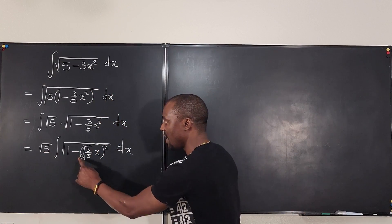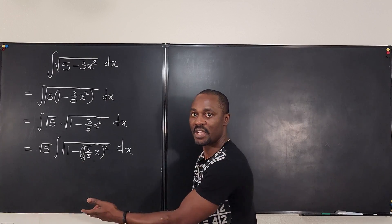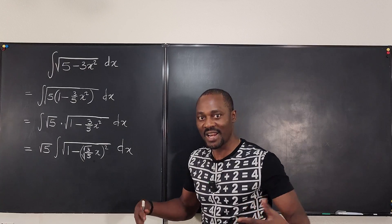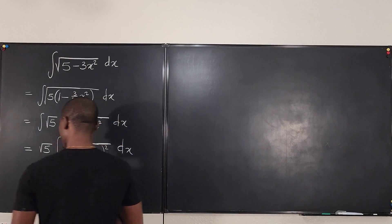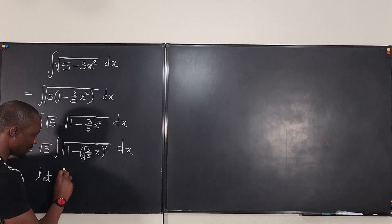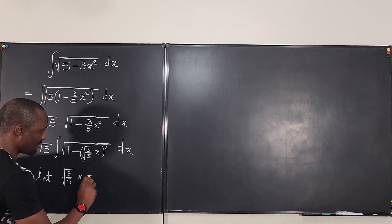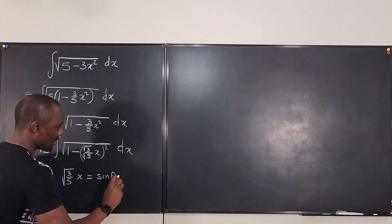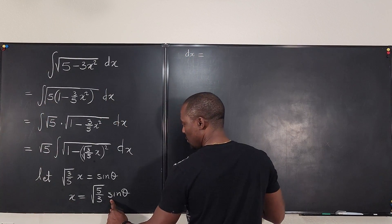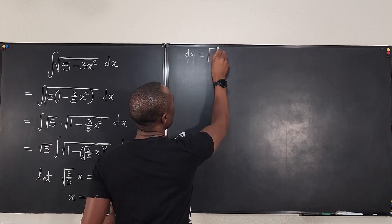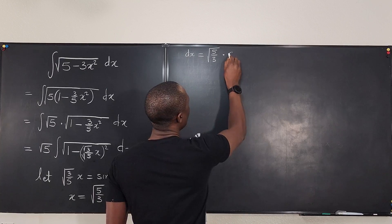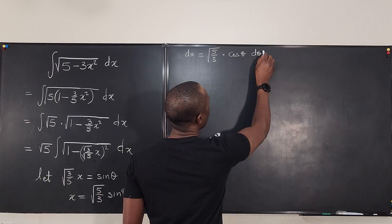It makes your life a lot easier if you can do this preparation, because now 1 minus sine squared theta is cosine squared theta, and the square root of cosine squared theta is just cosine theta, which I can integrate. So let's do that. We're going to say: let the square root of 3 over 5 x be equal to sine theta. So dx will be equal to — if I differentiate this — the square root of 5 over 3 multiplied by the derivative of sine theta, which is cosine theta d theta.